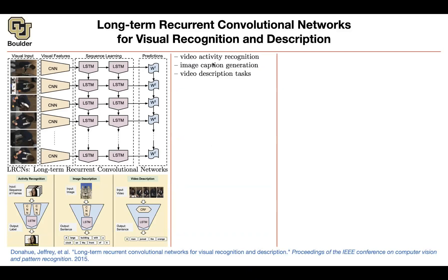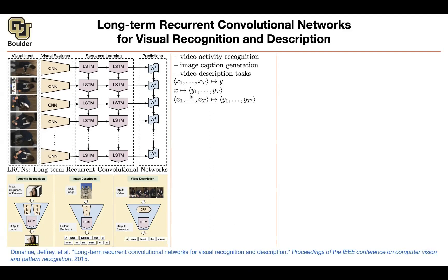These are the tasks: video description, image caption generation, and video description. For action recognition, you have a video — and a video you can think of as consecutive snapshots or consecutive images, image one up until image T — and then you want to know the corresponding label, the corresponding action. Somebody could give you an image and ask for a description, so the input is an image and the output is a sequence of words. Or a video goes in and a description comes out — sequence to sequence, where the first sequence is images and the second is words. It could also be a sentence going in and an image coming out. You can have all sorts of multimodal frameworks.